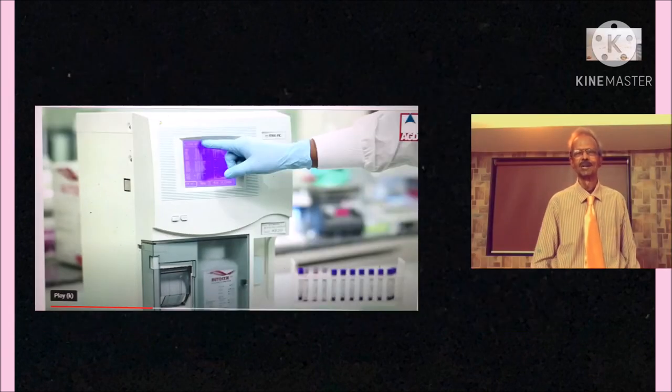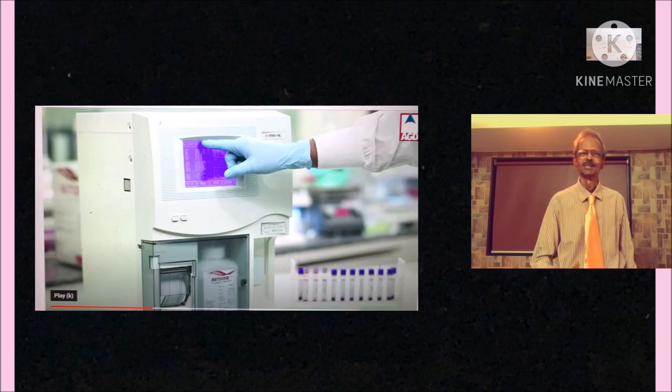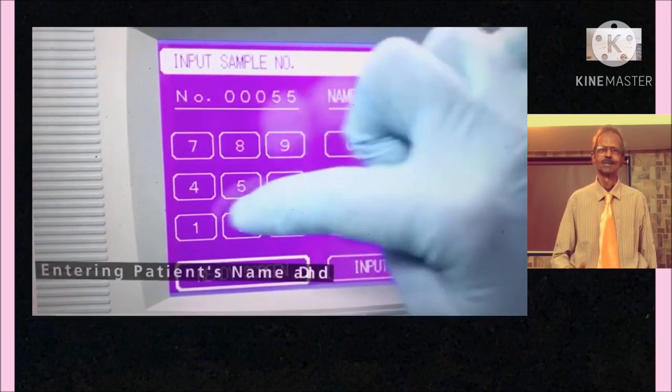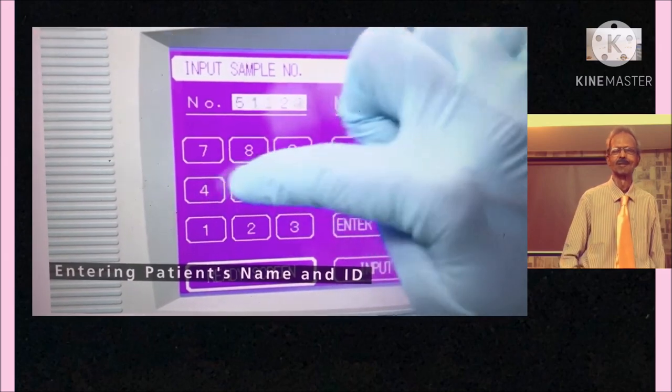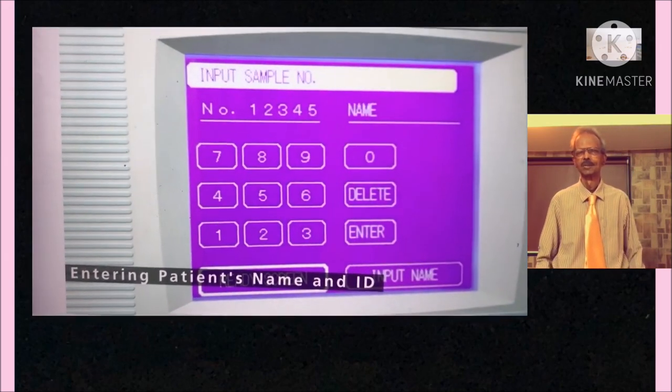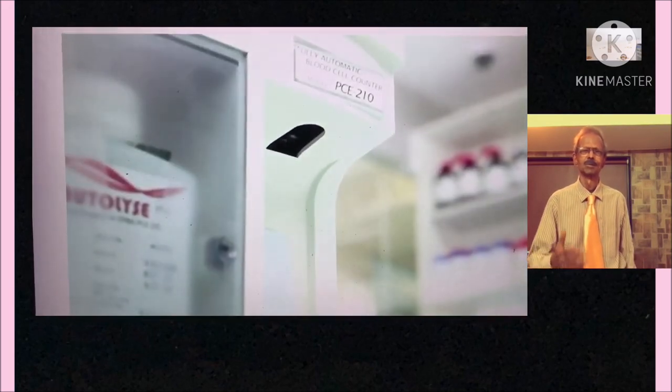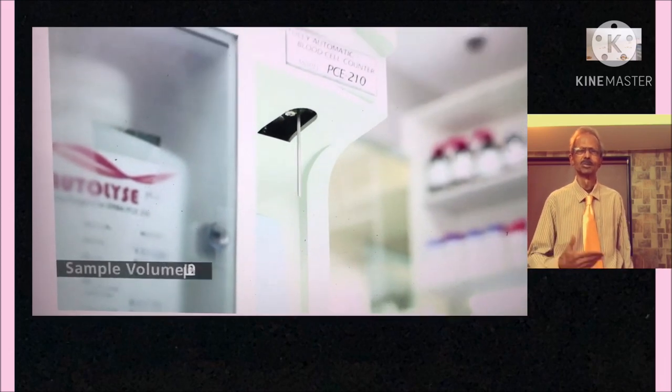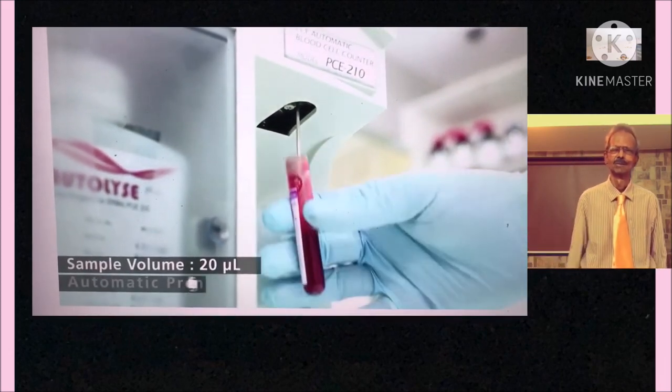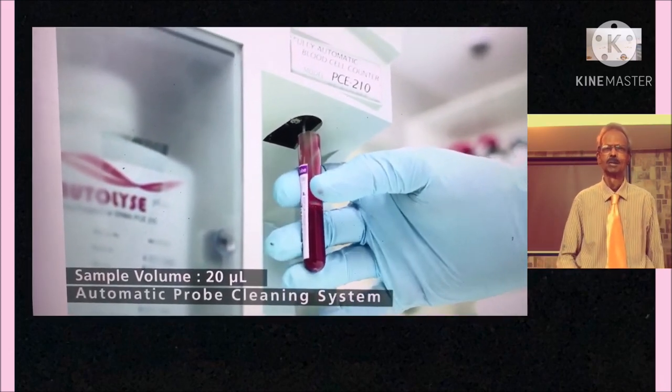Hematology autoanalyzer procedure: First establish control per patient's identity number and patient data. Load sample automatically. And in few minutes, you get the CBC report with a printout paper.